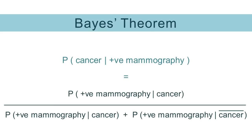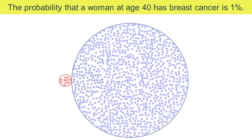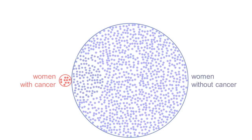We could explain this using Bayes' theorem, but it's not intuitive, so we'll use visualizations instead. We know that 1% have cancer, so if the dots represent women, then the pink dots are women with cancer, and the blue dots are women without cancer.